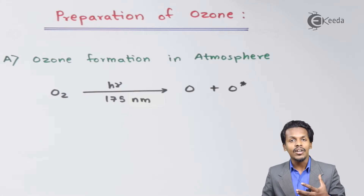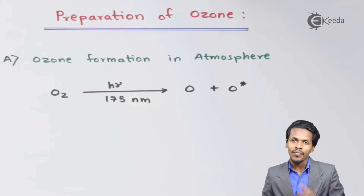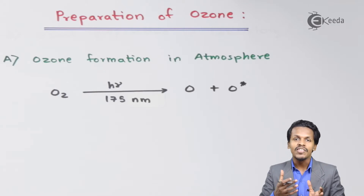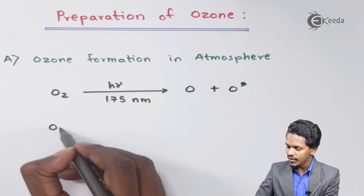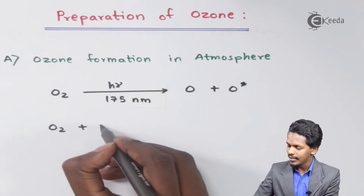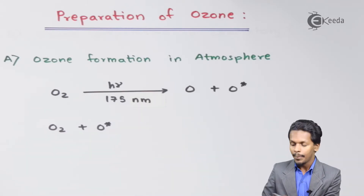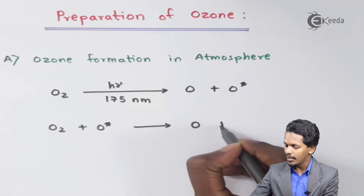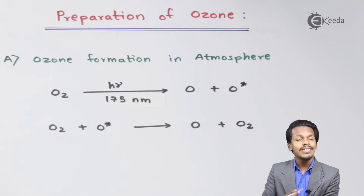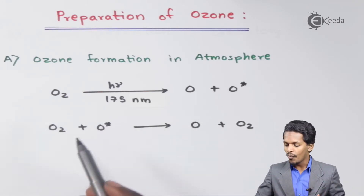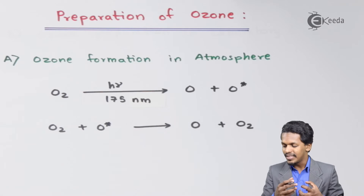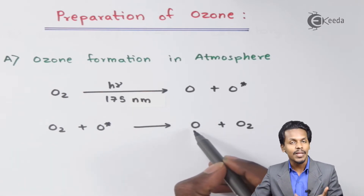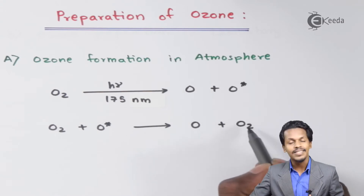Since the excited oxygen atom O* is very reactive, it will attack other oxygen molecules present in the atmosphere. The excited oxygen atom collides with O2, loses its energy, and de-excites back into a stable oxygen atom, while the O2 remains as it is.